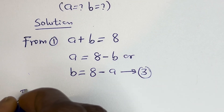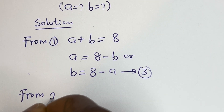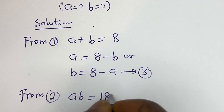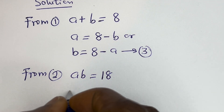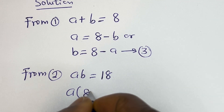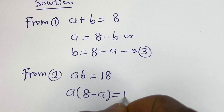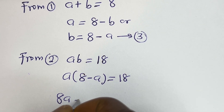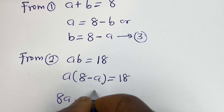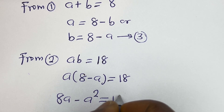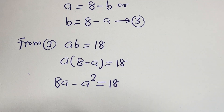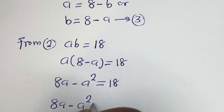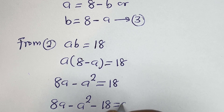Then from equation 2, ab is equal to 18. Substituting equation 3, we have a times (8 minus a) is equal to 18. That gives us 8a minus a squared is equal to 18.